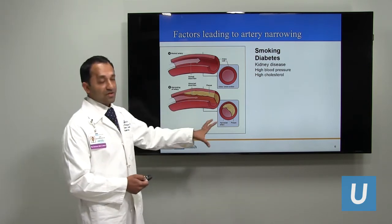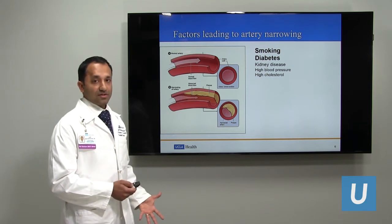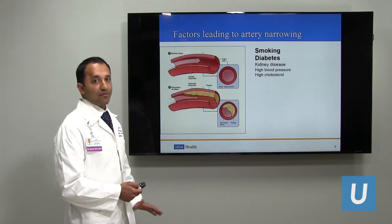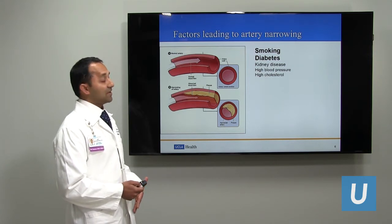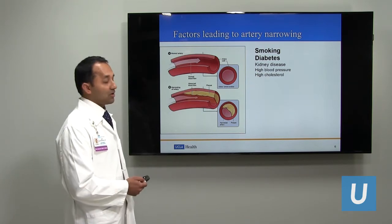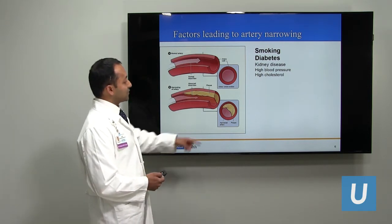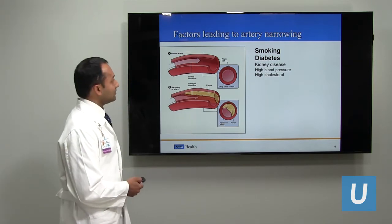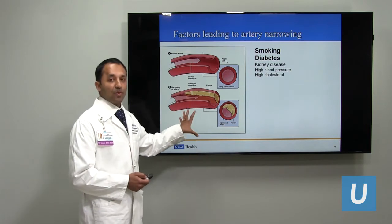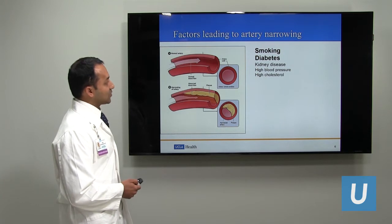Moving on to risk factors — why does this happen? Especially for peripheral arterial disease, the number one and two risks are smoking and diabetes by far. Unfortunately, being both a smoker and a diabetic offers you more than twice the risk as either one alone. In addition, kidney disease, high blood pressure, and high cholesterol are also risk factors for plaque deposition within these arteries. This mechanism is true no matter where the blockages are — whether in the heart, the brain, or other arteries.